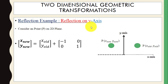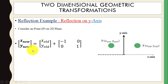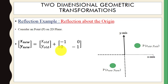Now we will do reflection on the y-axis. Here you can see the mirror — we have the point, this is the initial position, and this is the position after reflection. You can compute the reflection on the y-axis using this matrix: the new coordinates equal the old coordinates multiplied by this matrix.